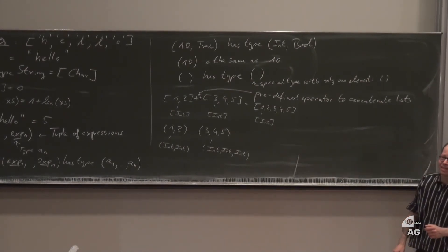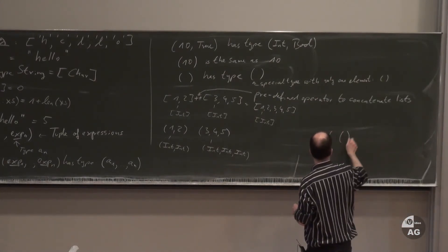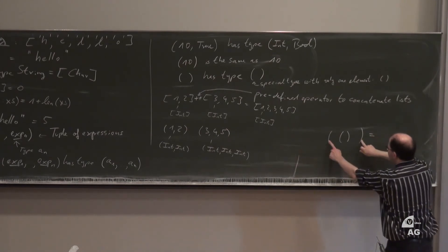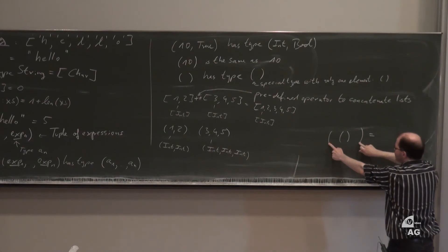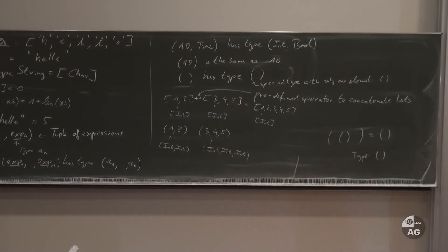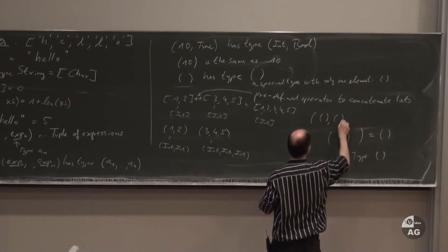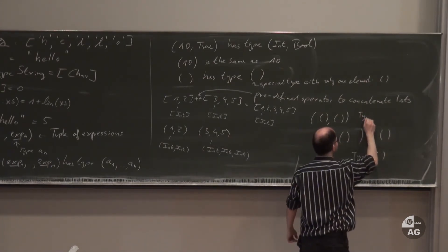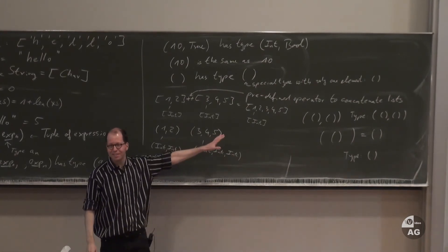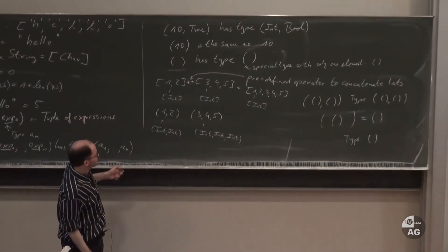If you write round brackets around a single element, the type is just the type of that element — it makes no difference. An empty tuple has type (). You can have a tuple with two empty tuples, written ((), ()), and its type is ((), ()). These are somewhat awkward constructions that you can use but generally shouldn't.